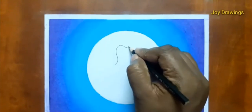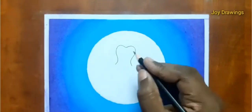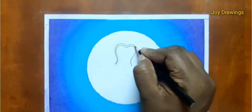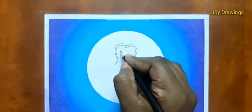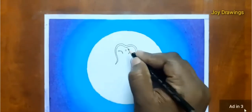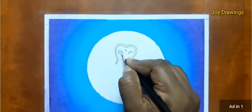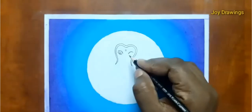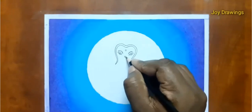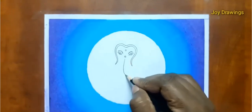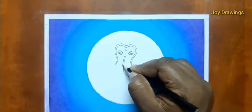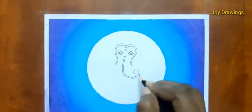Use 8B or 10B graphite pencil, or 16B, any darker pencil you have which is black to draw the Ganesha. But still, Lovely Arts is available to see.